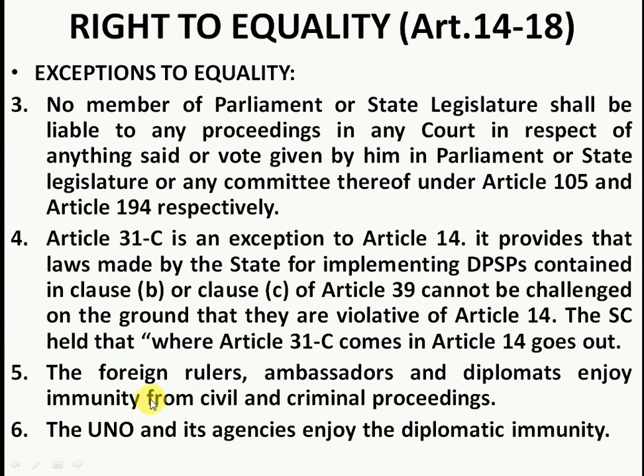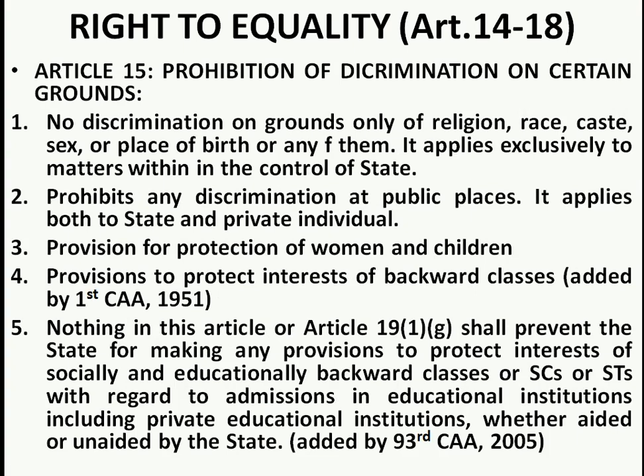Additionally, foreign rulers, such as a country's Prime Minister, President, Ambassador, diplomats, or UN officials and their agencies, are provided certain immunities against civil and criminal proceedings.